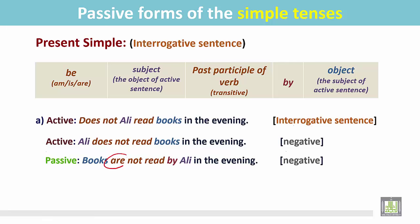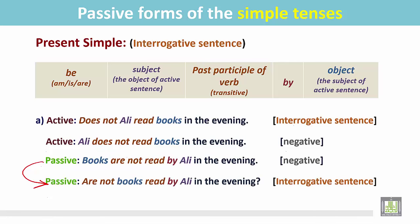We put the be verb at the beginning of the sentence to make the statement into an interrogative sentence: 'Are not books read by Ali in the evening?' It is an interrogative sentence. Thank you.